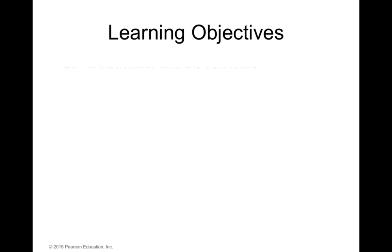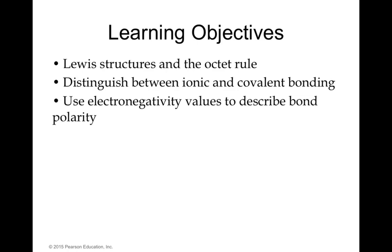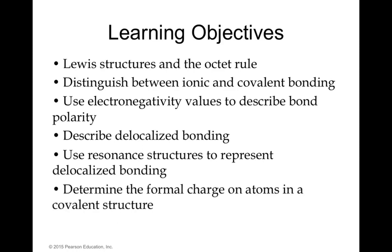The learning objectives for this chapter are: we're going to learn how to draw structures and learn the octet rule. We'll distinguish between ionic and covalent bonding, use electronegativity values to describe bond polarity, describe localized bonding and use resonance structures, determine formal charges on atoms in covalent structures, and relate bond order and bond length.